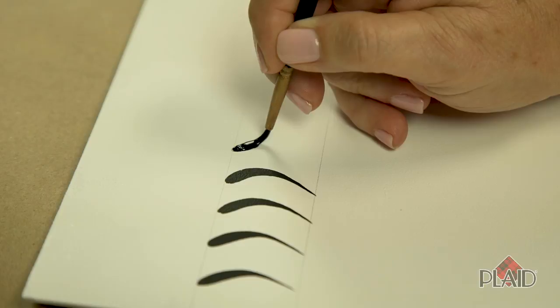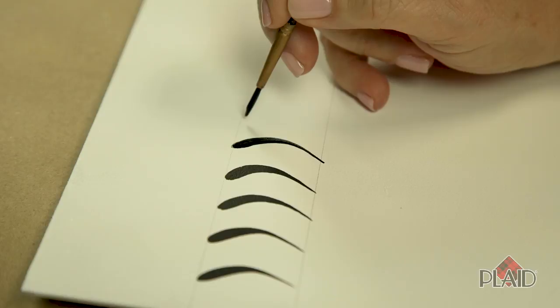Touch, apply pressure, pull, lift, and drag slightly to the left, end back up on the tip of the brush. And that is commonly called a comma stroke that's angled to the left.